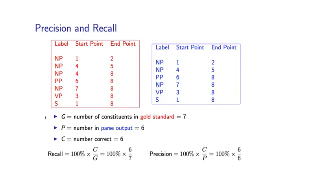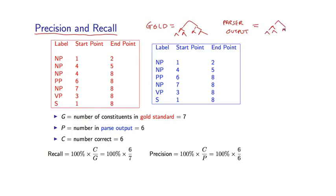Now let's see how we can use this idea to evaluate a parser. This is done by calculating precision and recall on these constituents. In general, I'll have some gold standard tree for a test sentence — the human annotated tree, taken as correct — and then parser output, which is also a tree. Both trees can be mapped to a set of constituents, where a constituent consists of a label, a start point, and an end point.